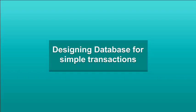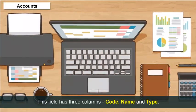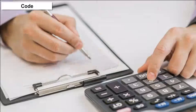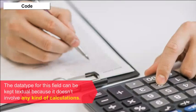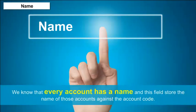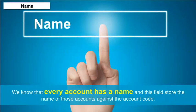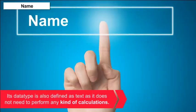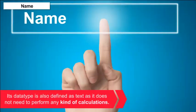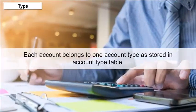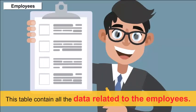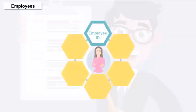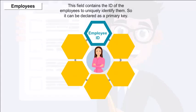Accounts: This table has three columns — Code, Name and Type. Code: Every individual has a separate account number. The data type can be kept as text because it doesn't involve calculations. Name: Every account has a name; this field stores the name against the account code, with data type also text. Type: Each account belongs to one account type as stored in the account type table. Employees: This table contains all data related to employees. Employee ID is the primary key to uniquely identify them.